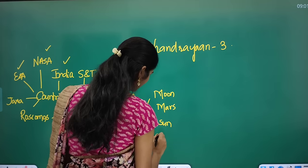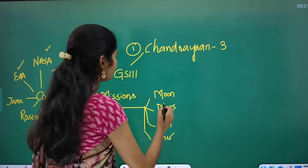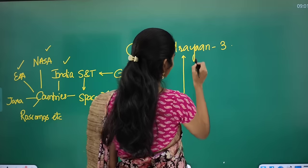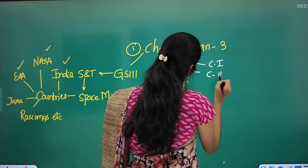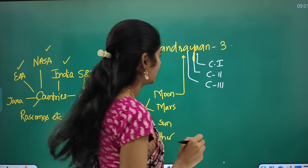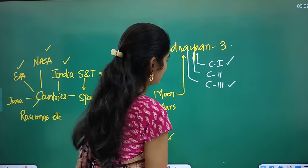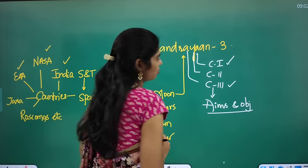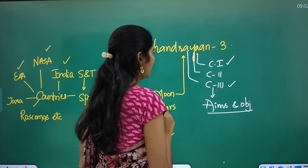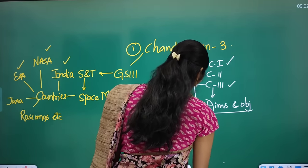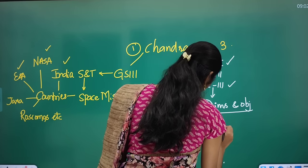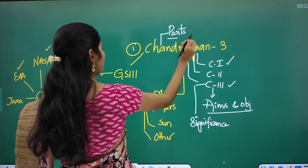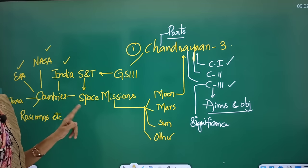This article talks exclusively about moon missions. Questions may be asked on Chandrayaan 1, 2, and 3. Chandrayaan 1 and 3 are successful missions, while Chandrayaan 2 was a failure. You should know the aims and objectives, significance, and parts of Chandrayaan 3. These are the key dimensions. A possible MCQ: 'Statio Shiv Shakti is in news — it is related to what?' The answer is the Chandrayaan 3 landing site on the surface of the moon.